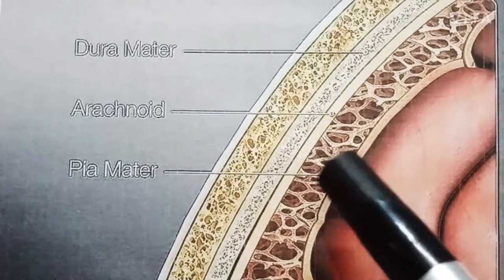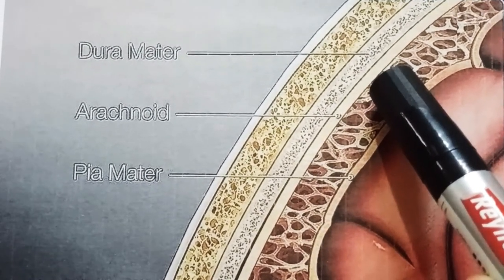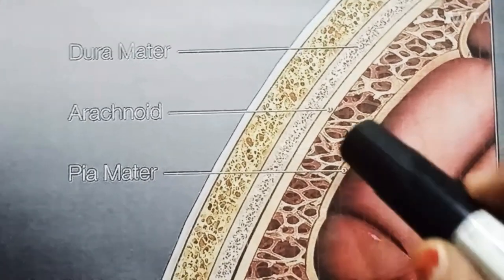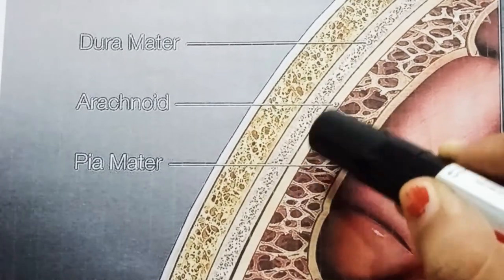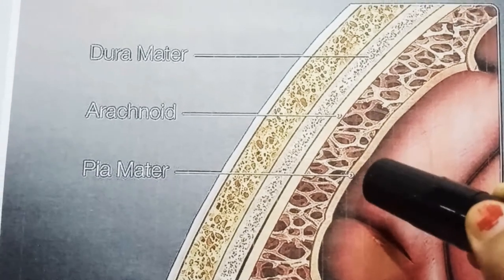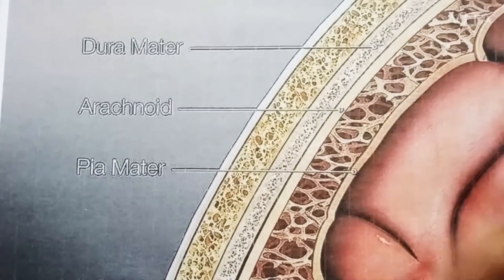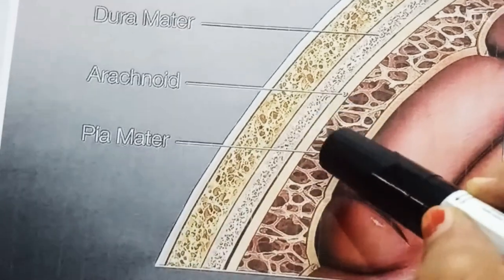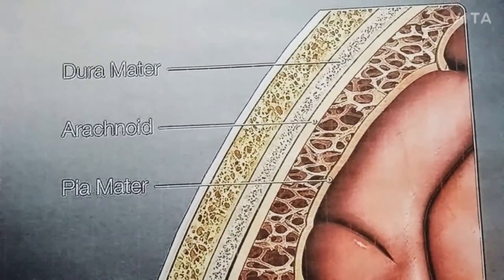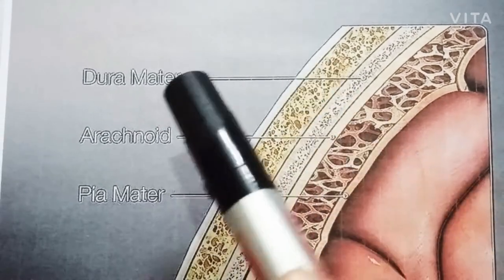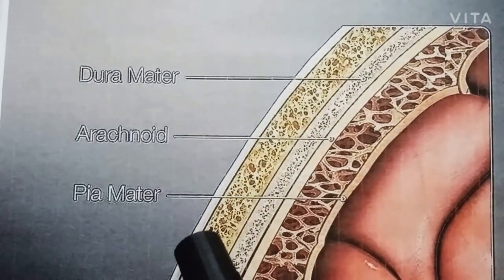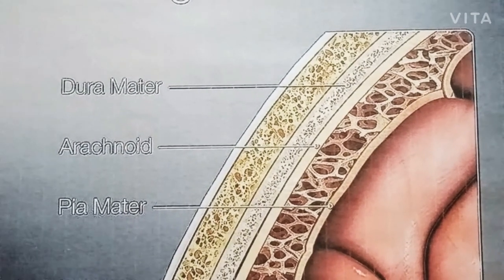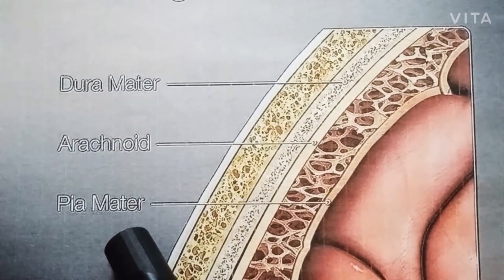The arachnoid layer is named because of its web-like structure. There are connective tissue trabeculae — spider web-like extensions — that connect the arachnoid to the pia mater below it. The word 'mater' actually means 'mother' in Latin, because these layers protect the brain. Pia mater means 'soft mother,' and dura mater means 'tough or durable mother.' The arachnoid is named for the connective tissue trabeculae network resembling a spider web.